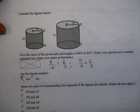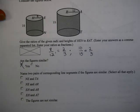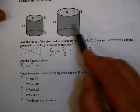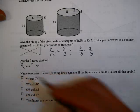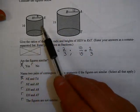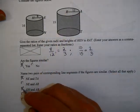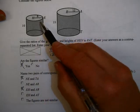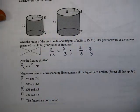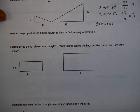And now it says, name two corresponding pairs of line segments if the figures are similar. And certainly, NE and AT are similar. NE and AR are not corresponding parts. EH and AR are corresponding parts. EH and AT are not, and of course, the figures are similar. So, that's just a little idea about similarity.